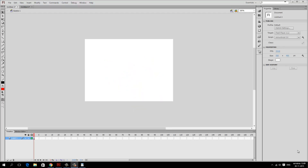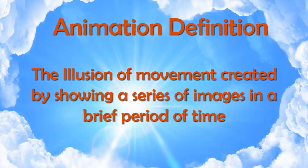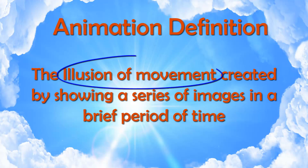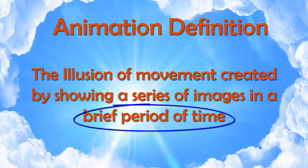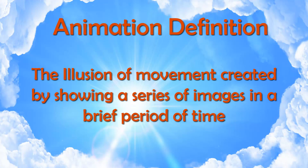Before we create our animation, let's first understand what animation is. Animation is defined as the illusion of movement created by showing a series of images in a brief period of time. This means animation is not real movement — it is an illusion. This illusion is created with a series of images shown in a brief period of time, meaning we need to show approximately 24 drawings in one second.